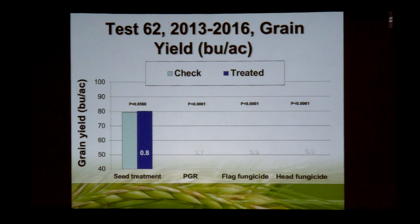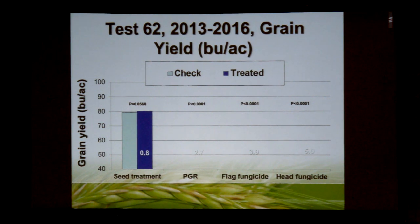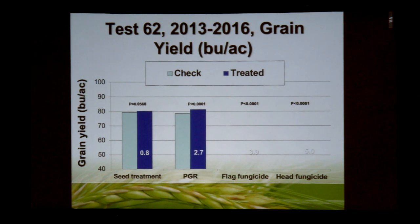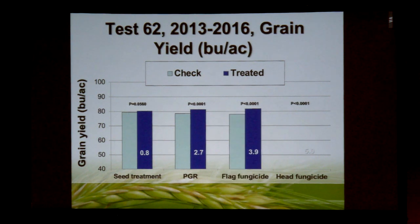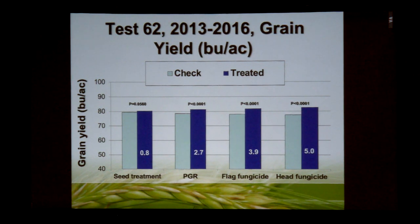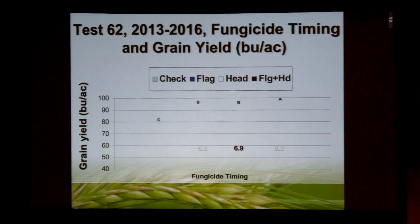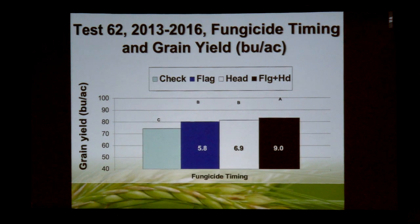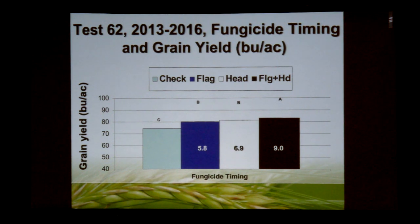What about yields? Again looking at the main effect treatments: the seed treatment gave a weak yield effect of just under a bushel per acre, so it may not necessarily be economic. The PGR gave just under a three-bushel-per-acre increase in yield. It was really with the flag leaf and head emergence fungicide where we saw a four to five bushel per acre yield increase overall. With our check our lowest yields: flag leaf fungicide increased yield by just under six bushels per acre; head emergence gave seven bushels per acre; and both flag and head emergence together gave nine bushels per acre.